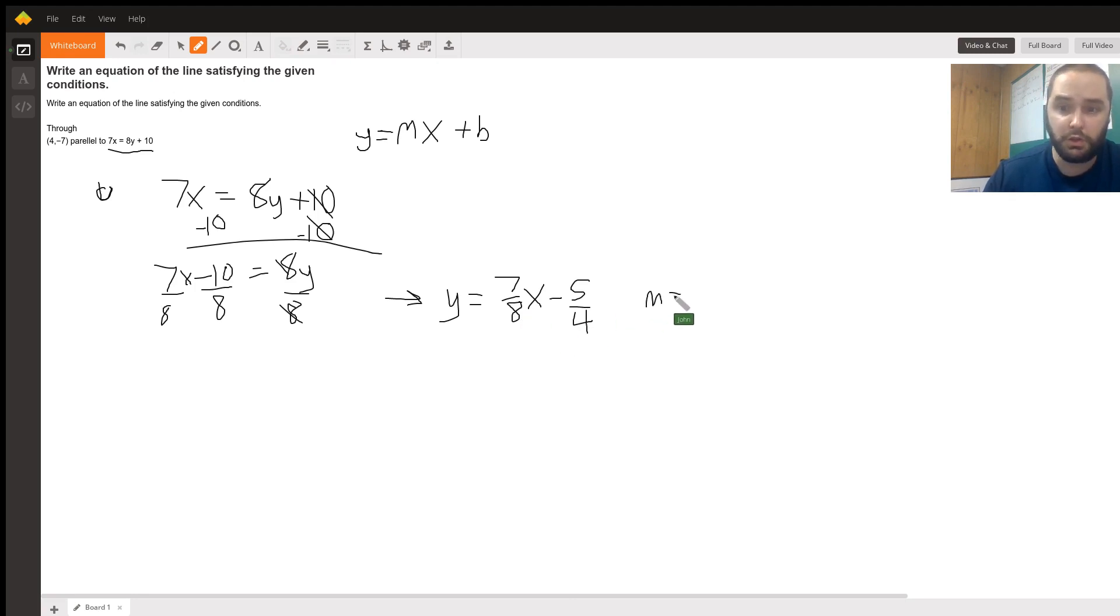Now here, our slope is 7/8. Lines that are parallel have the same slope. So the slope we're going to use is 7/8.